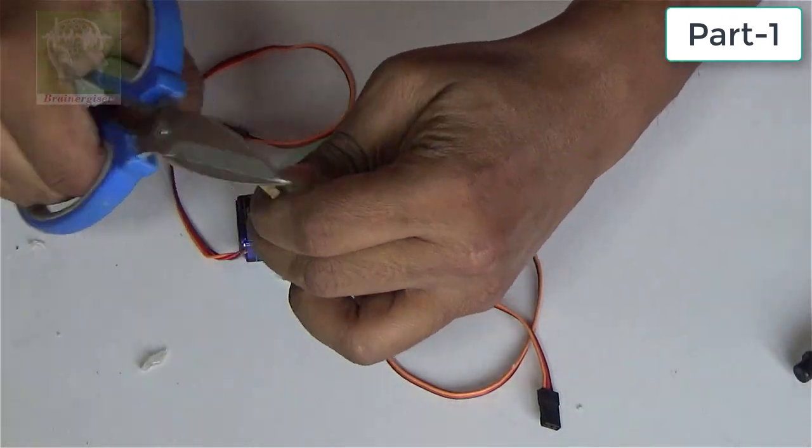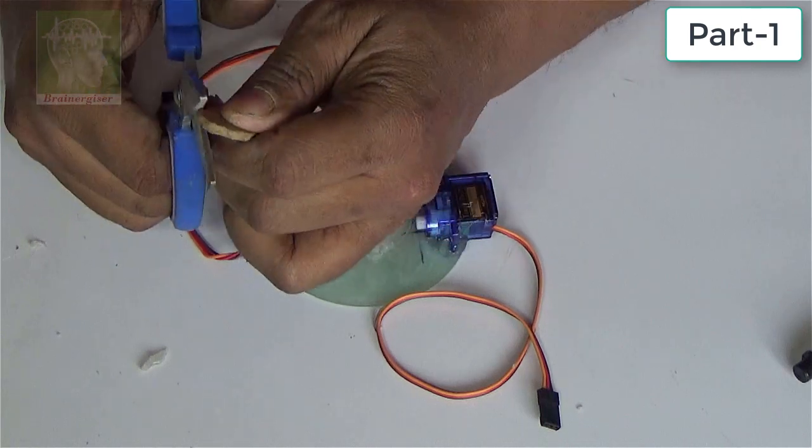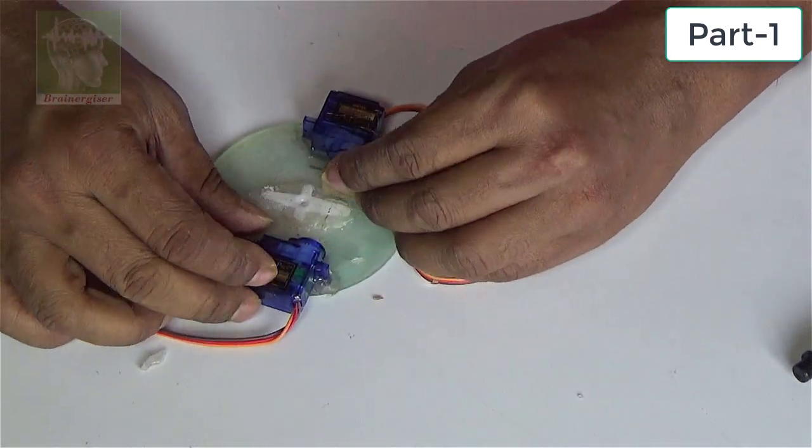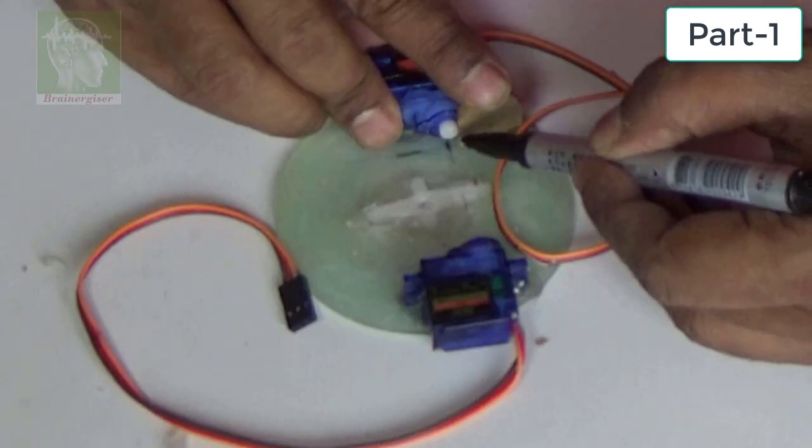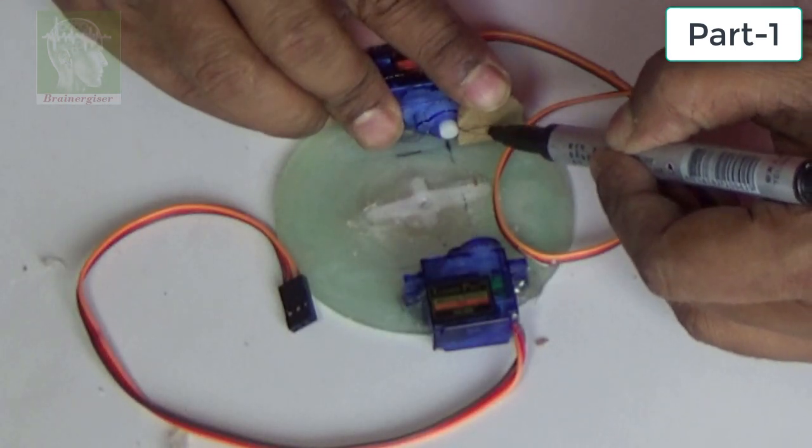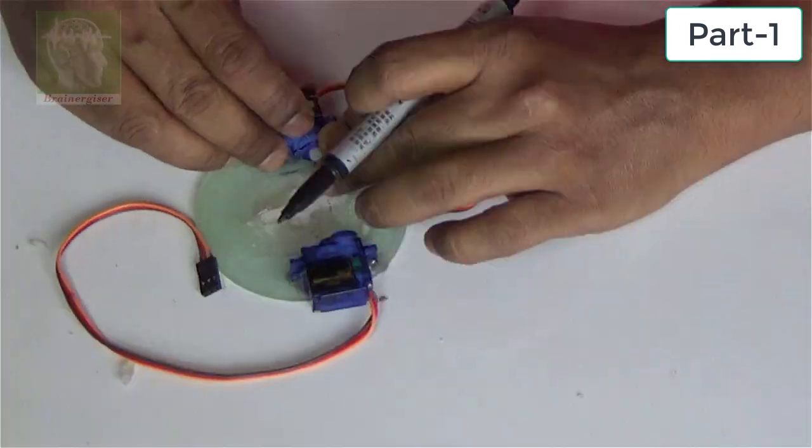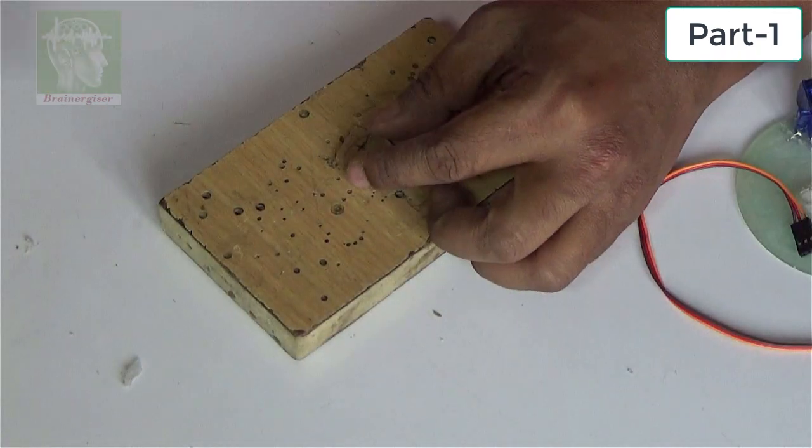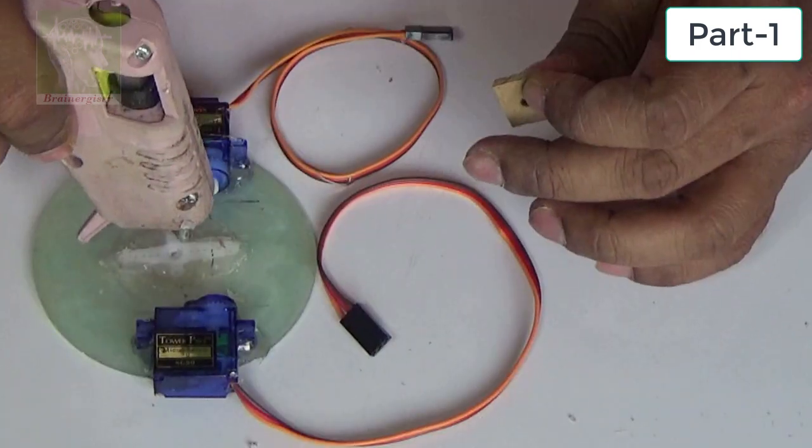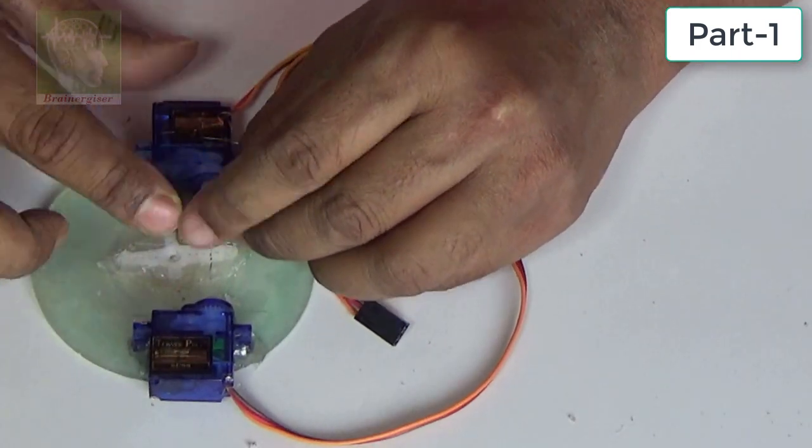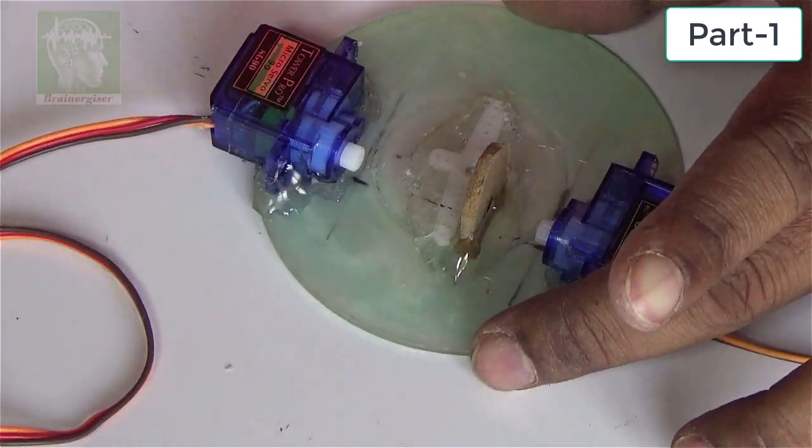Now I need a clamp. So I'm going to cut an MDF piece and make a drill at the exact height of the servo shaft itself. Then glue it with enough glue like this.